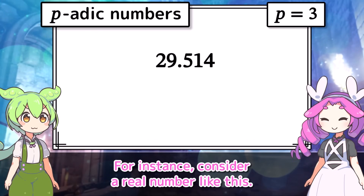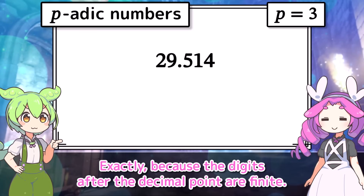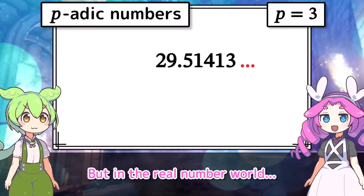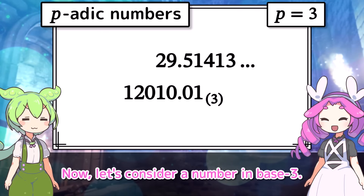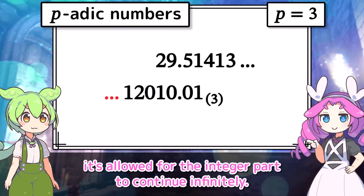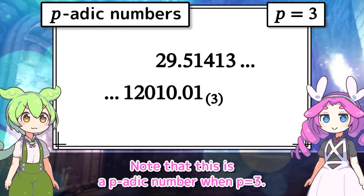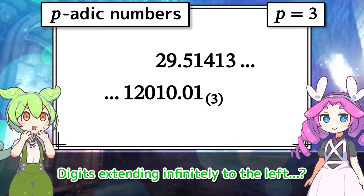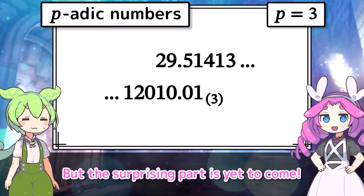For instance, consider a real number like this. This is what they call a finite decimal, because the digits after the decimal point are finite. But in the real number world, having infinitely many digits after the decimal point is allowed. Now let's consider a number in base 3 — this is just a rational number, but here's where the real fun begins. In the world of P-adic numbers, it's allowed for the integer part to continue infinitely, but it's not allowed for the fractional part to continue infinitely. Digits extending infinitely to the left? That's impossible. Well, it might be hard to accept at first, but the surprising part is yet to come.